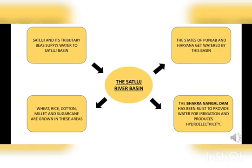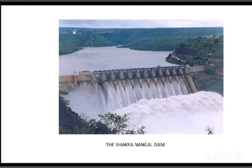The dam provides water for irrigation and also produces electricity. To produce electricity using water is called hydroelectricity — the word 'hydro' comes from water. Here is the picture of the Bhakra Nangal Dam, and you can see very clearly there is a barrier or a big wall of stones to stop the flow of water.